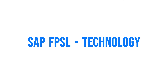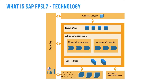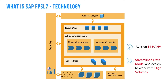Let's look at some technology aspects of SAP FPSL. As you can see, SAP FPSL has different layers: the source data layer, the subledger accounting layer, and result data. SAP FPSL runs on S/4 HANA, which is SAP's in-memory database technology. SAP FPSL also comes with a streamlined data model which supports high volumes of data.